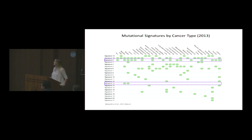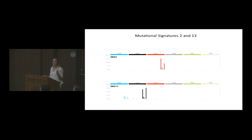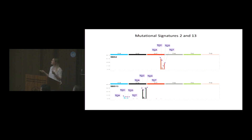Why together? These signatures are different because signature 2 is characterized by C-to-T mutations, whereas signature 13 is characterized by C-to-G and C-to-A mutations. But they have two things in common: both are characterized by mutations at cytosine, and if you look at the sequence context, cytosines in both signatures 2 and 13 are preceded by a thymine — a very specific trinucleotide sequence context.